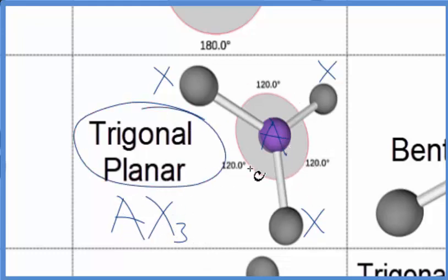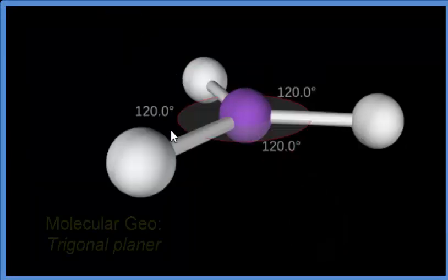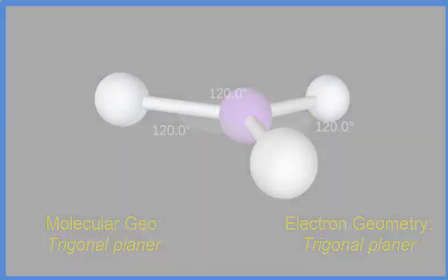Because we don't have any lone pairs, this would also be the electron geometry. So for our CH3+ ion, we have a molecular geometry of trigonal planar and bond angles of 120 degrees. This is Dr. B, and thanks for watching.